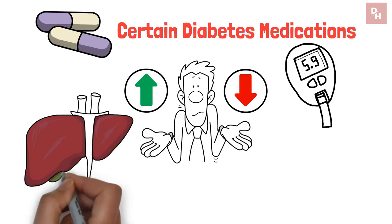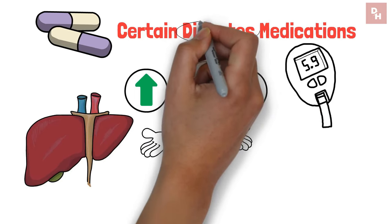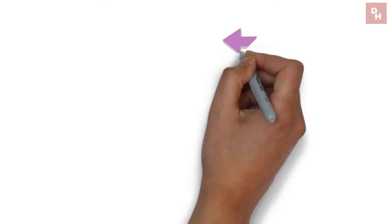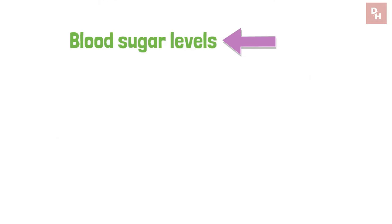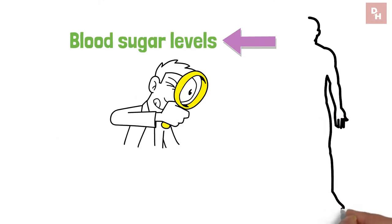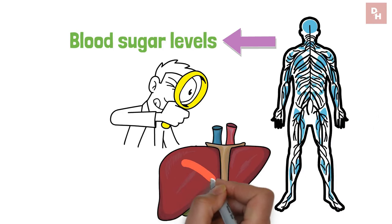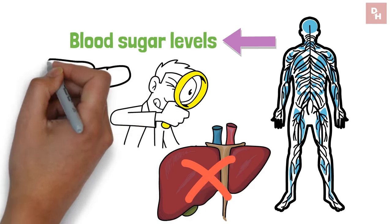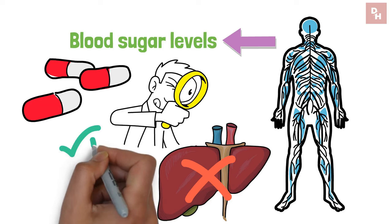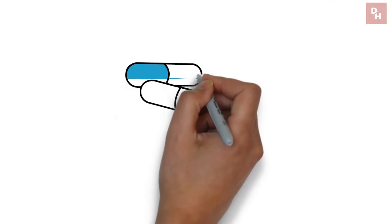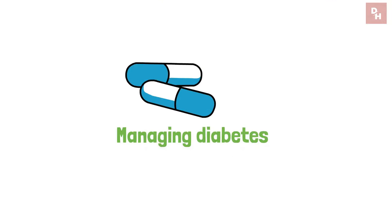Balancing blood sugar and liver health isn't a piece of cake. Managing diabetes is a bit like walking a tightrope. On one side, you've got your blood sugar levels that need constant attention. On the other, there's the rest of your body's health, including your liver, which sometimes doesn't get the spotlight it deserves. It turns out, some of the medications we rely on to keep our blood sugar in check can be a bit of a double-edged sword for our liver.